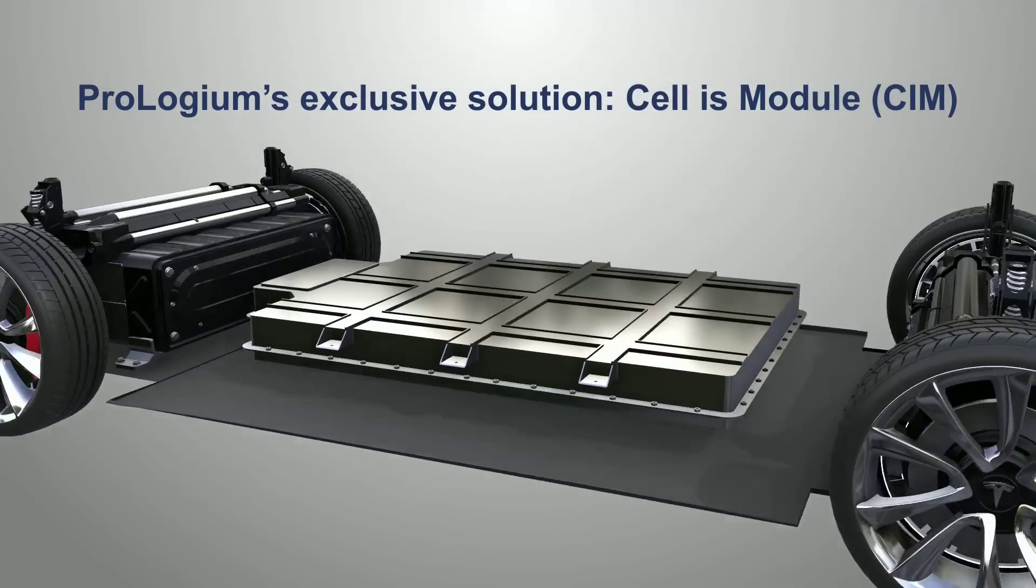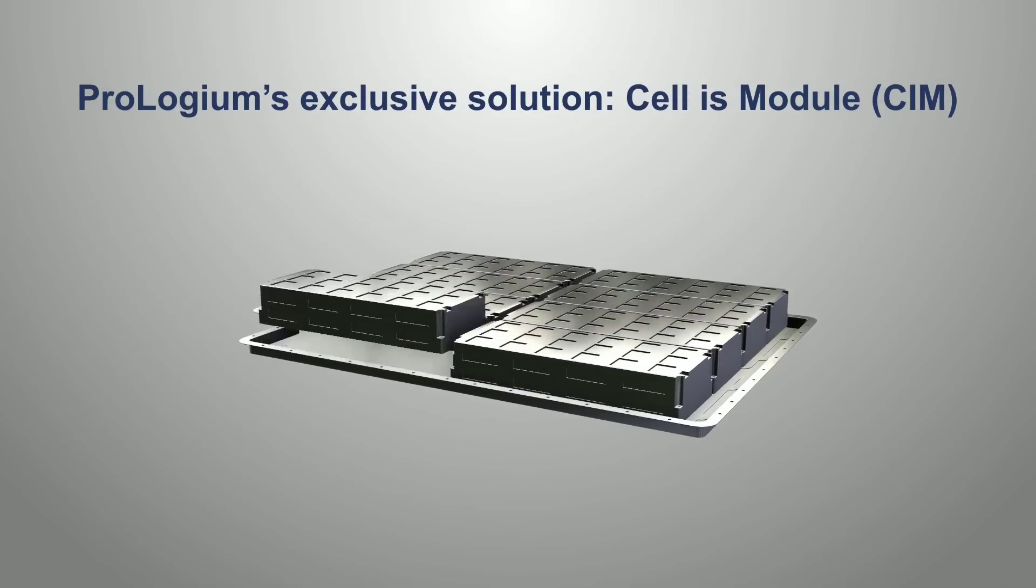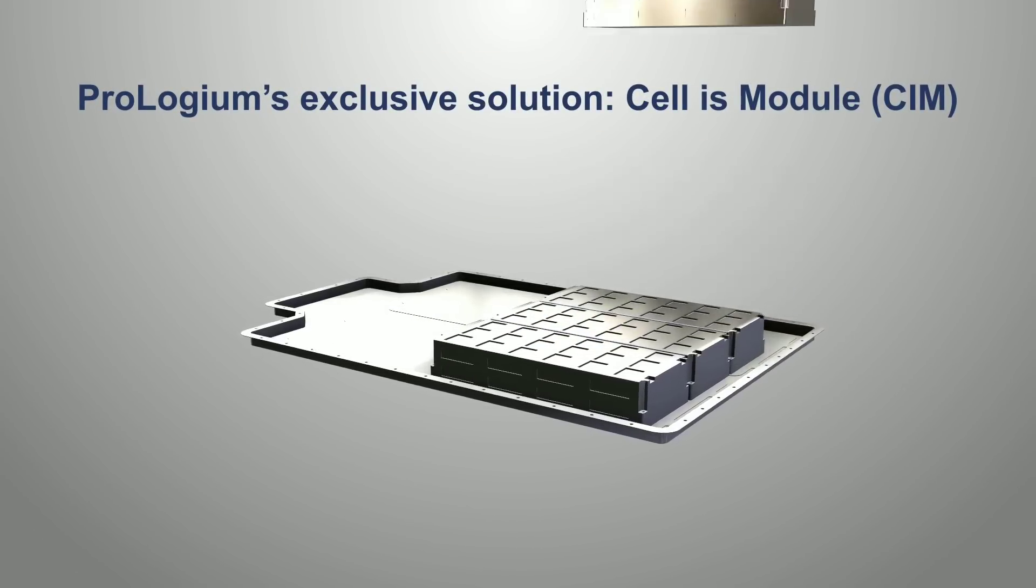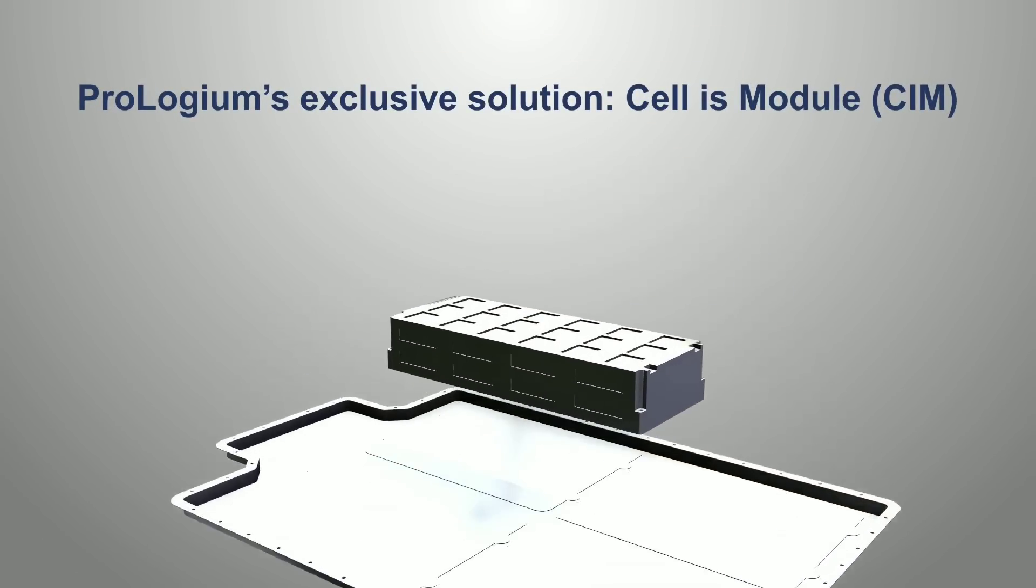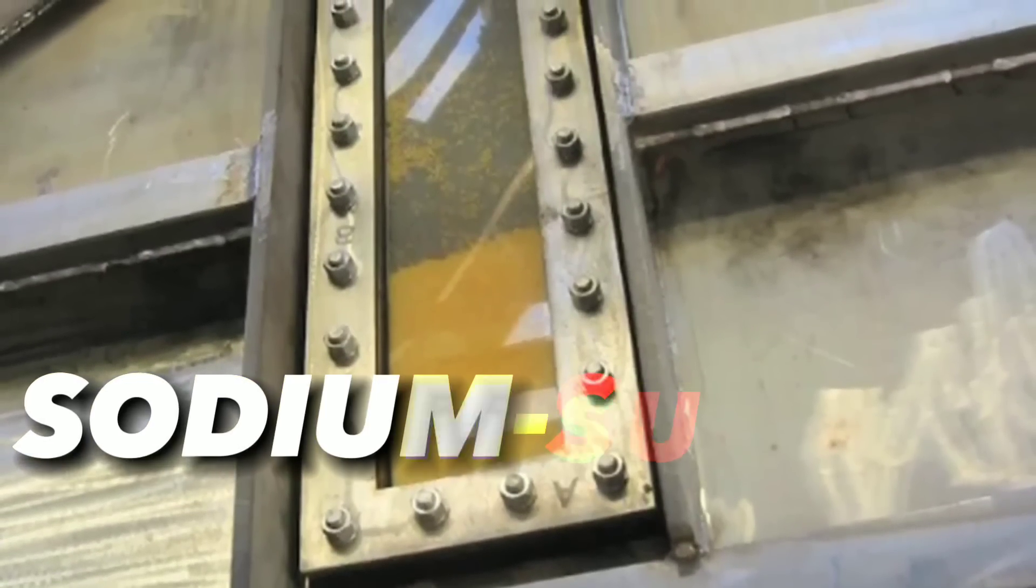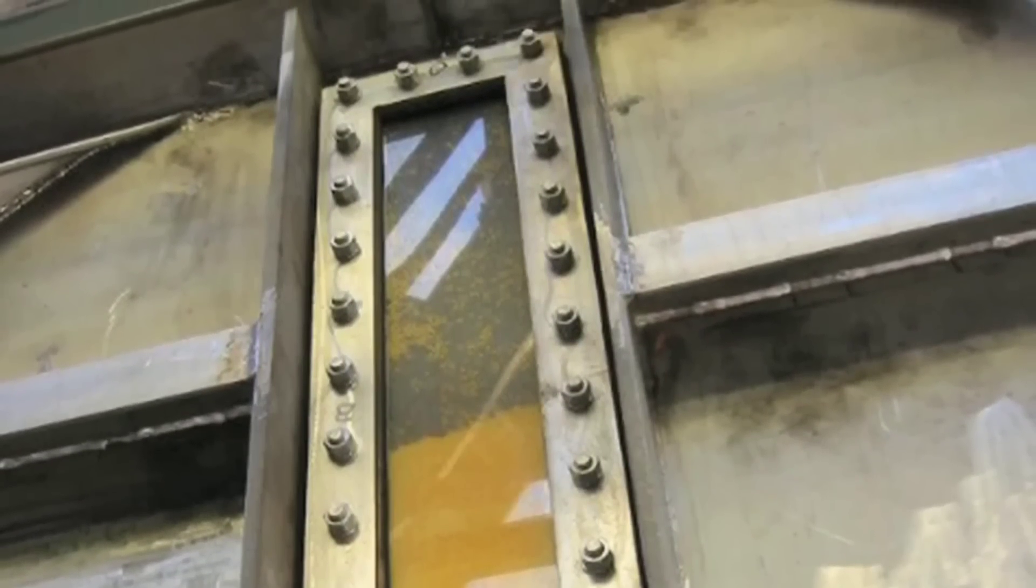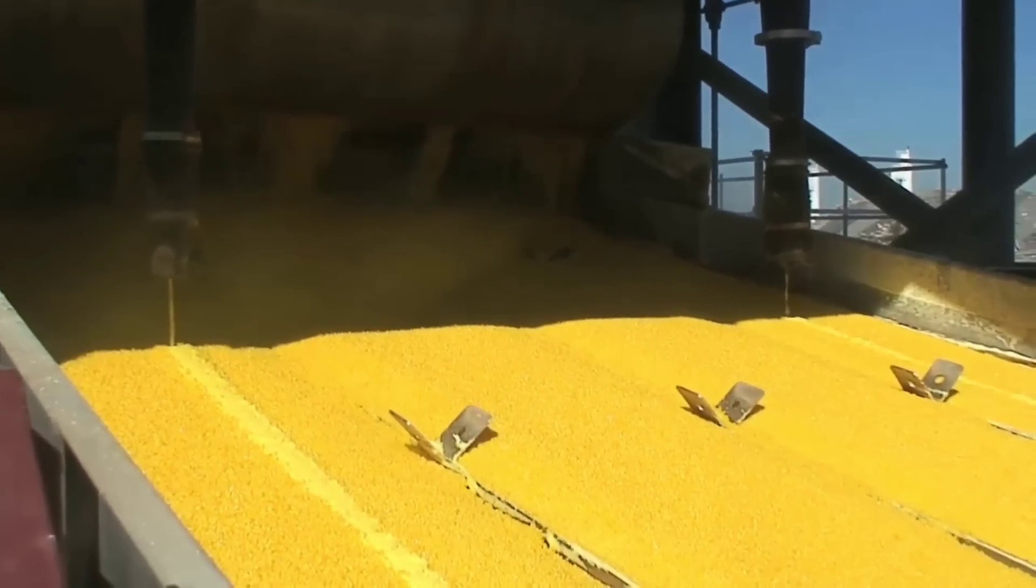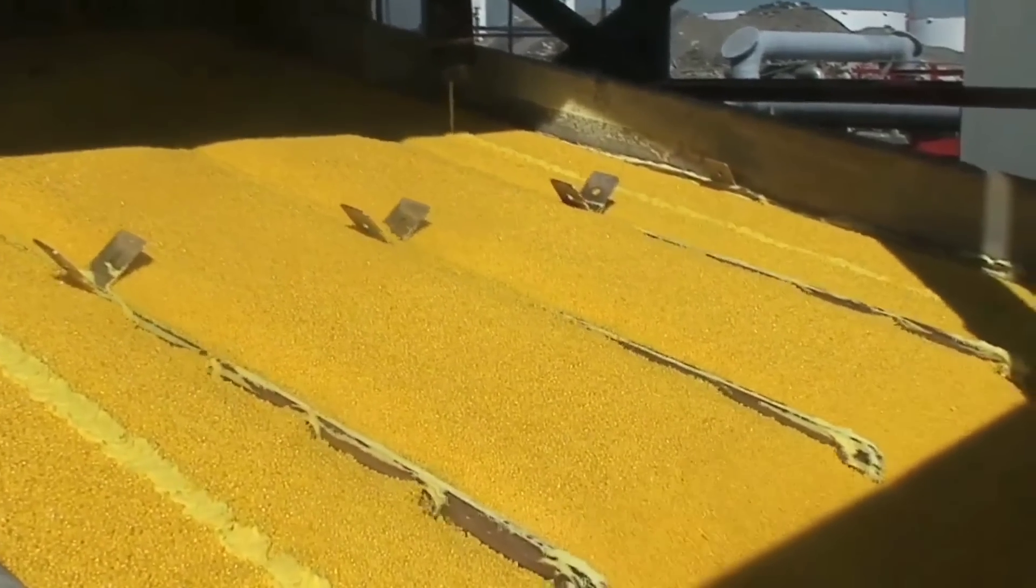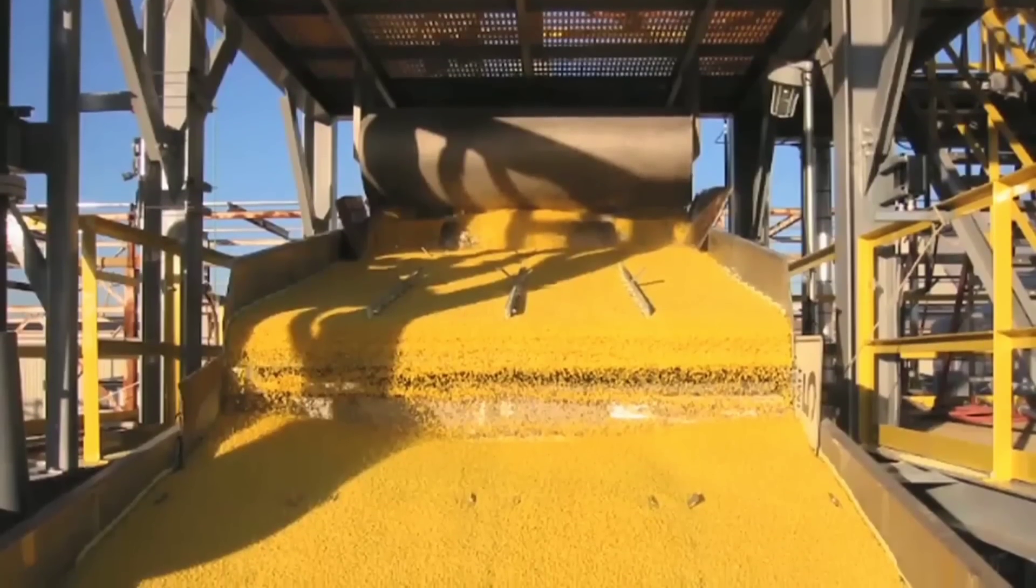This is the story of the solid-state liquid battery breakthrough by Elon Musk researchers. Solid-state liquid batteries are a type of molten salt battery that uses sodium sulfur instead of lithium. Sodium sulfur is cheap, abundant, and environmentally friendly. It can be extracted from seawater, unlike lithium, which requires intensive mining and causes water shortages and soil degradation.